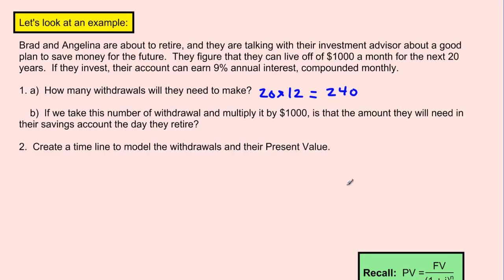If we take this number of withdrawals and multiply it by $1000, is that the amount they will need in their savings account before the day that they retire? Well if they're going to take $1000 out a month 240 times, that's $240,000 that they're going to be spending over their retirement. Now is that the amount of money that they need to initially put into their account the day that they retire? And the answer is no.